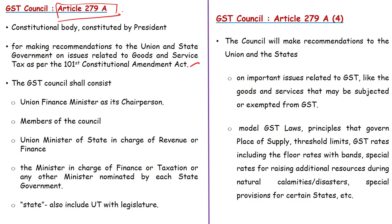As per Article 279A, the Goods and Services Tax Council shall consist of the following members: the Union Finance Minister as chairperson, the Union Minister of State in charge of revenue or finance as a member, and also the ministers in charge of finance or taxation nominated by each state government as members. Union territories with legislature like Delhi, Puducherry, and Jammu & Kashmir are also represented in the GST Council.